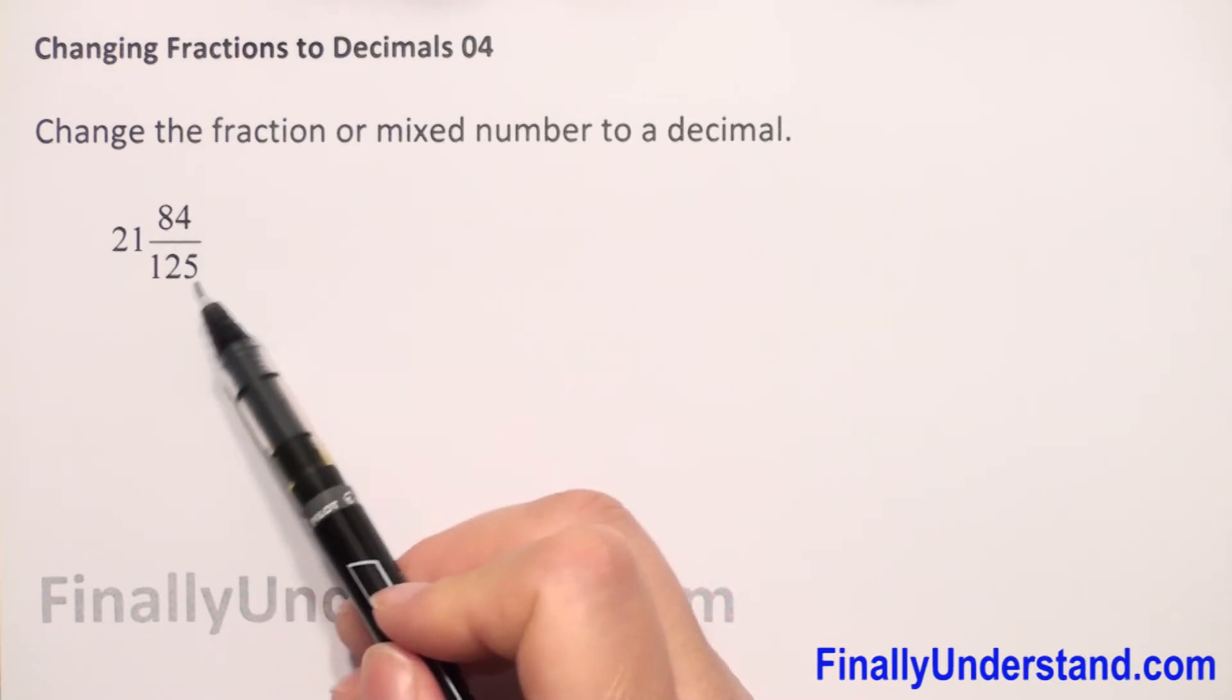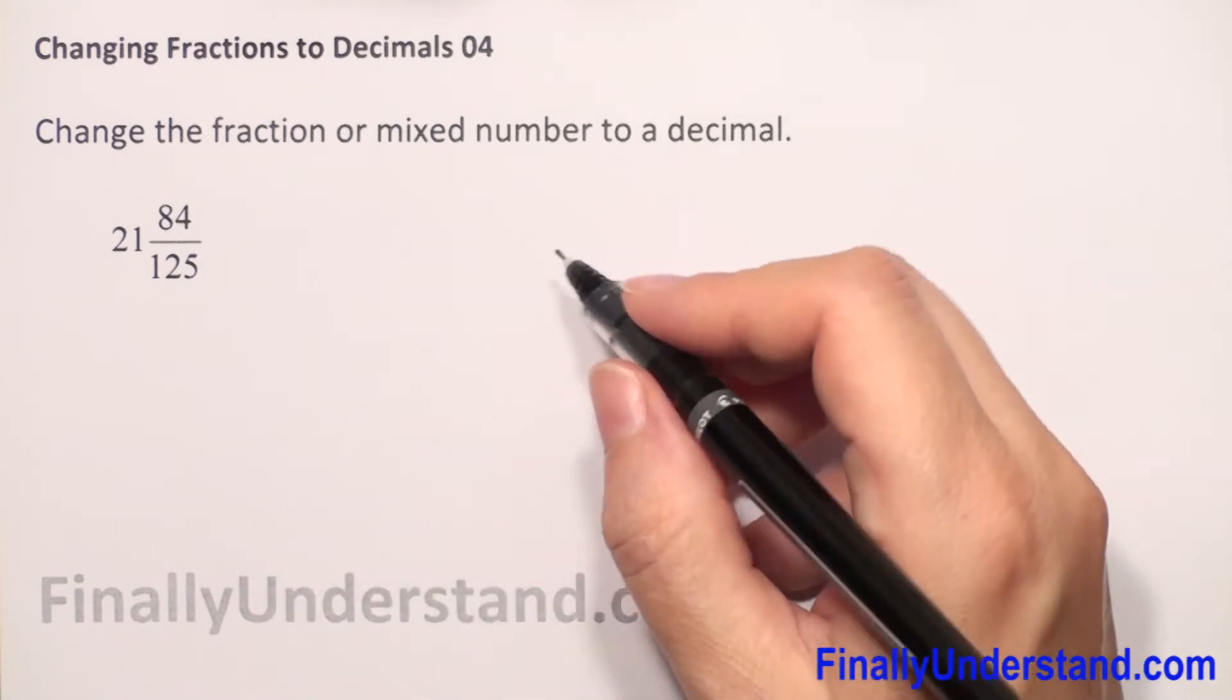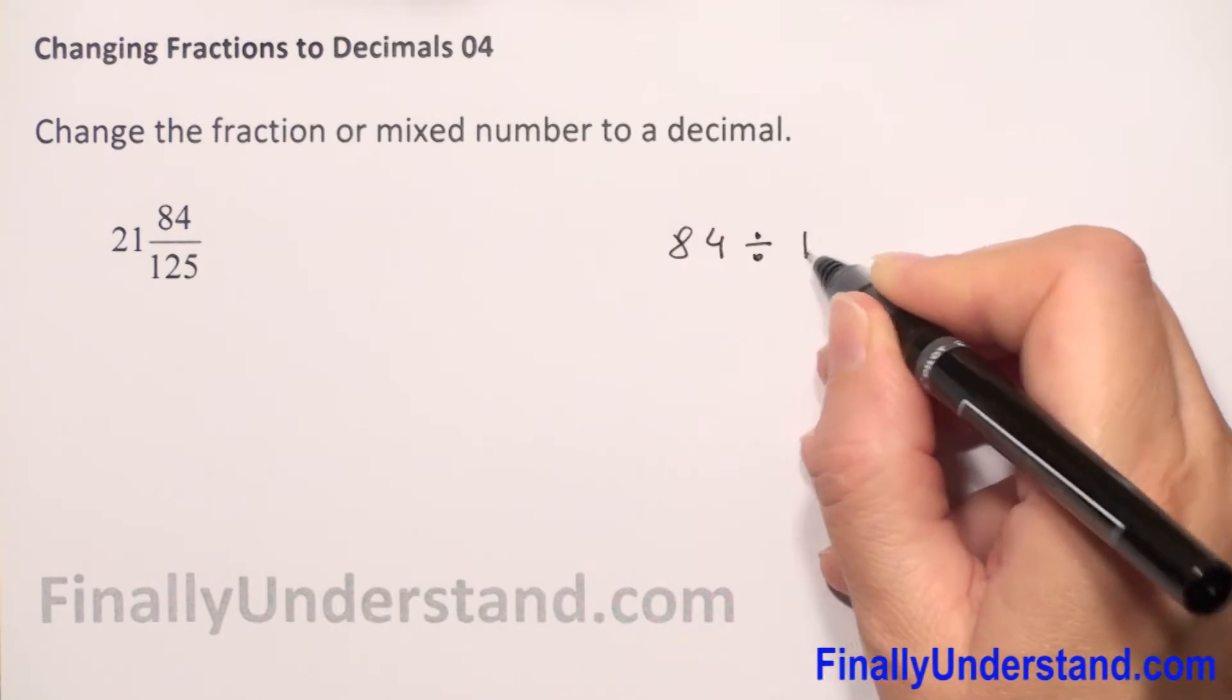How do we change to decimal? We have to divide the numerator by the denominator, so we have to divide 84 by 125.